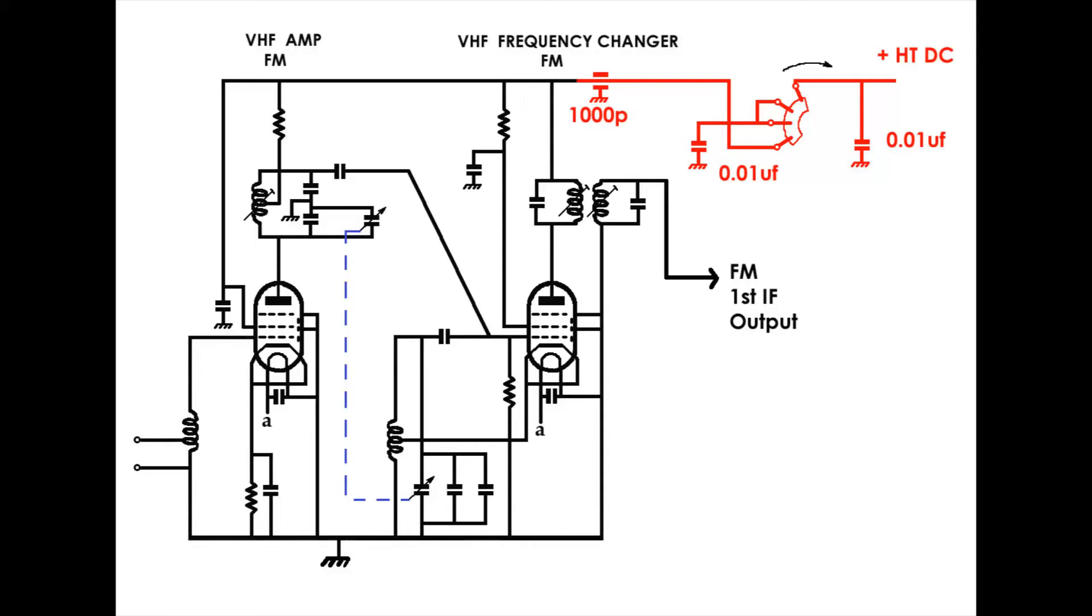So that little 1000 pF capacitor is just taking care of everything that's inside the can and making sure that it doesn't get out via the HT rail. So continuing the journey of the positive HT DC, it travels down through the primary of the IF transformer there, the first IF-FM transformer to the anode of V2.